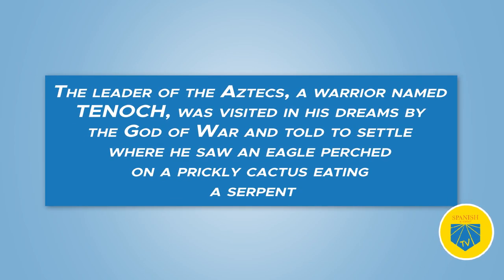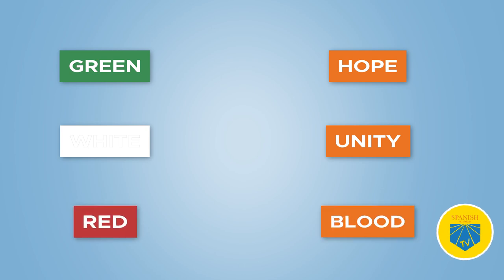The design of Mexico's coat of arms comes from Aztec myth. As the story goes, the leader of the Aztec — a warrior named Tenoch — was visited in his dreams by the God of War and told to settle where he saw an eagle perched on a prickly cactus eating a serpent. He discovered this site on an island in the middle of a lake surrounded by volcanoes. The Aztec capital was located where Mexico City is now. The colors of the Mexican flag are green, white, and red. The green represents hope, the white unity of the Mexican nation, and the red stands for the blood of the national heroes.